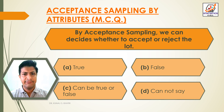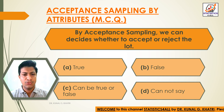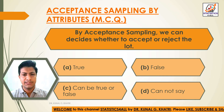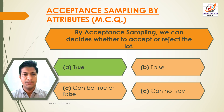Question 4: By acceptance sampling, we can decide whether to accept or reject the lot. Option A: True. Option B: False. Option C: Can be true or false. Option D: Cannot say. The answer is Option A — True. By acceptance sampling we can decide whether to accept or reject the lot.